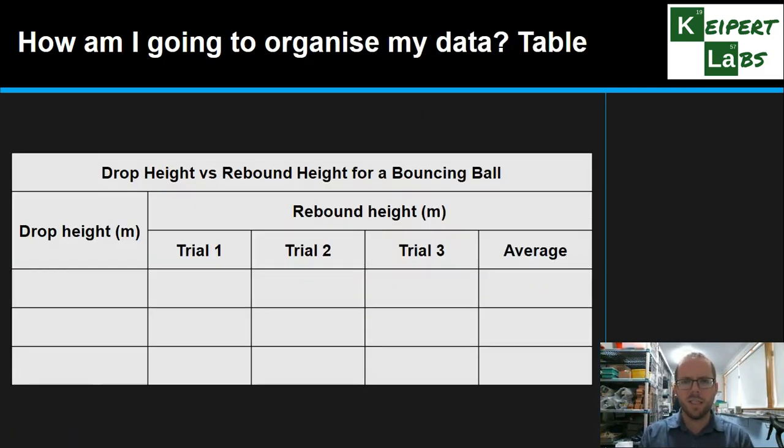How am I going to organize my data? So once I start collecting results, where am I going to put them? How am I going to make sure that I can be organized, systematic about it? So here's an example of a results table that we might use for that drop height, rebound height experiment. Notice it's got a title. It's got headings for the variables. It's got spaces for our trials and an average as well so we can work out how that looks.